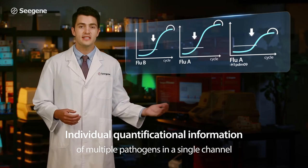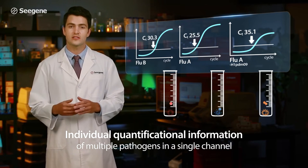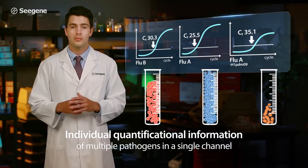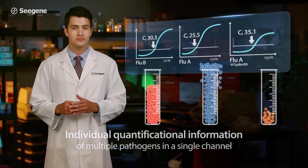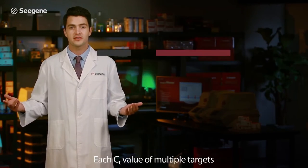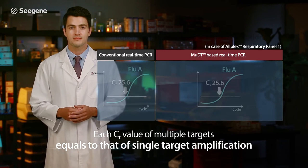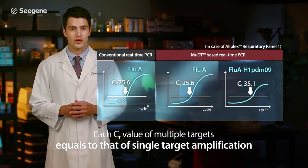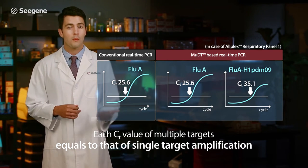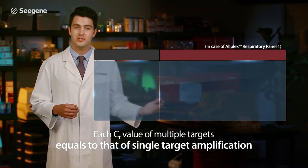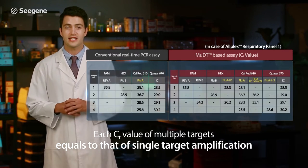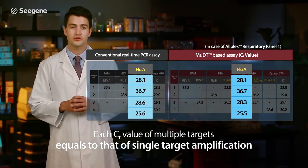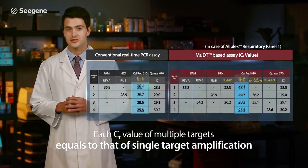MUDT technology makes it easy to quantify many individual pathogens in a single channel simultaneously. No compromises in data quality are required. Multiple target detection with MUDT technology is as accurate as conventional real-time PCR technique.